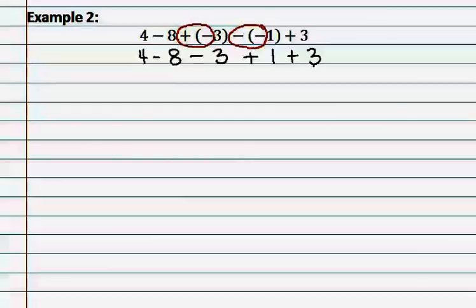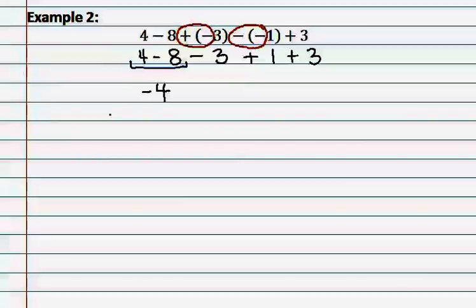After bringing all the pieces down, we can see that we have no double signs and can start working from left to right. We start with the two numbers at the front: a positive four and a negative eight. These two numbers have different signs, so we subtract them. Eight minus four gives us four, and since eight is the larger number, we keep its sign, giving us negative four.